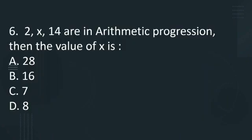Sixth question and also the last one: 2, x, 14 are in arithmetic progression, then the value of x is option A: 28, option B: 16, option C: 7, option D: 8.